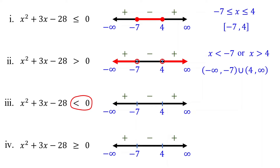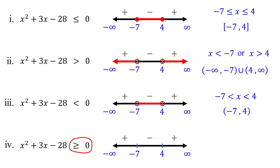When the inequality is less than 0, you need to identify intervals where the quadratic expression is negative only. It is negative when x is between negative 7 and 4. Therefore, the inequality holds true for any value of x between negative 7 and 4, but not including negative 7 and 4, as the inequality is less than 0 only. To represent this solution on a number line, mark open circles at negative 7 and 4 and shade the line between these circles. When the inequality is greater than or equal to 0, you need to identify intervals where the quadratic expression is either positive or 0. It is positive when x is less than negative 7 or greater than 4, and it is 0 when x equals negative 7 and 4. Therefore, the inequality holds true for any value of x less than or equal to negative 7 or greater than or equal to 4.